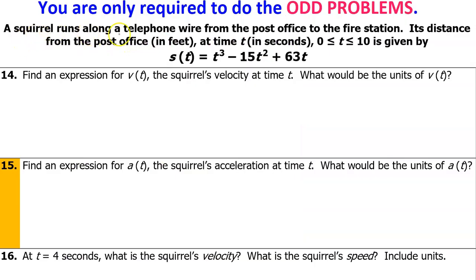A squirrel runs along a telephone wire from the post office to the fire station. Its distance from the post office in feet at time t in seconds, for the interval from 0 to 10 seconds, is given by this equation. So this is a position equation.